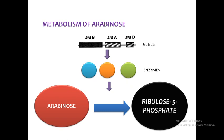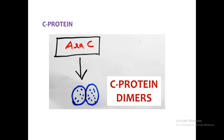The main metabolic pathway involving the arabinose operon is the conversion of arabinose into ribulose-5-phosphate. This conversion is carried out by three enzymes, which are coded by three genes: AraB, AraA, and AraD. These genes are the integral structural genes of the arabinose operon.